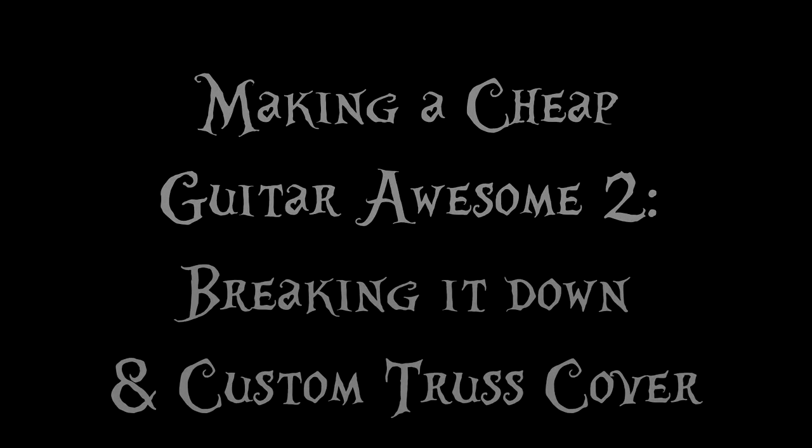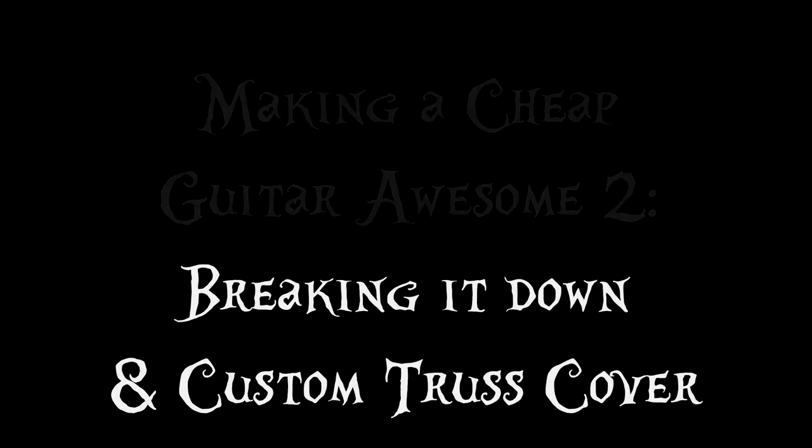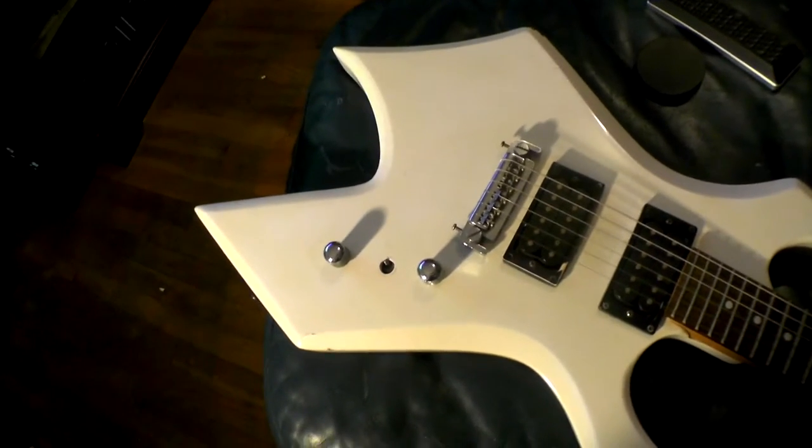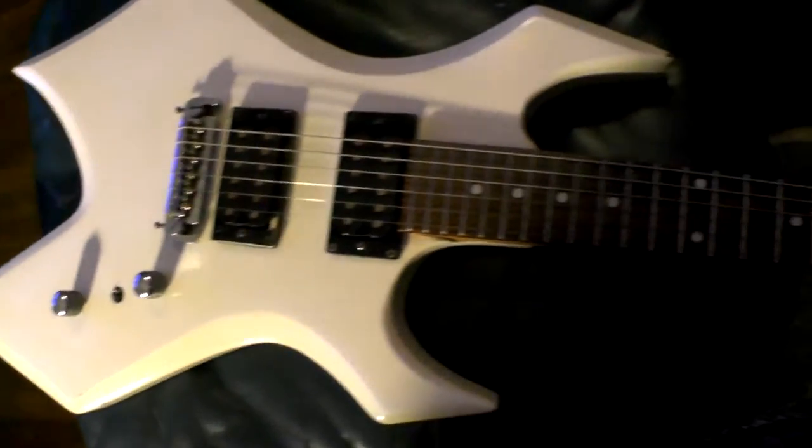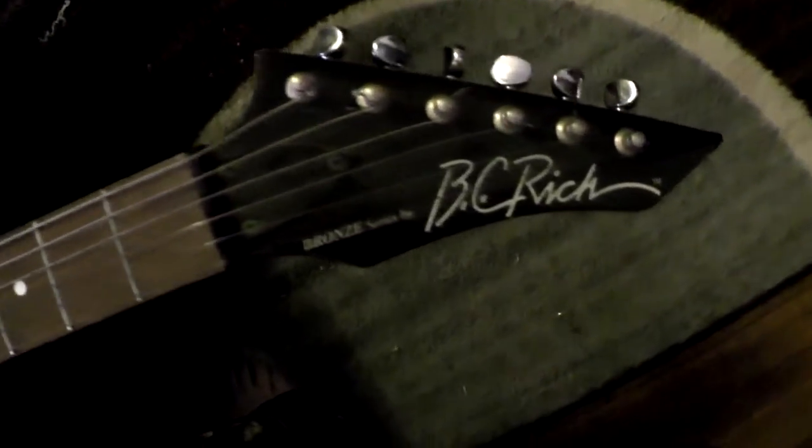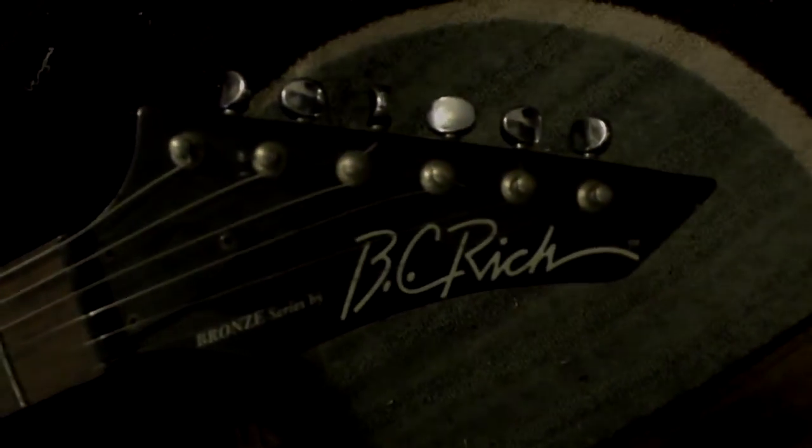Alright everyone, welcome to the second episode of making a cheap guitar awesome. We're going to be breaking down the BC Rich Warlock Bronze Series. Here's the body, and the neck and the headstock, which will look radically different. We'll also be doing our truss rod cover this episode. To break it down, I figured I'd make some breakdown music.